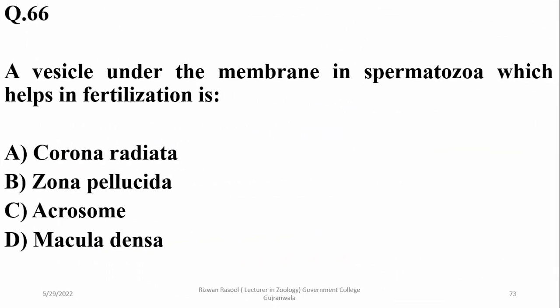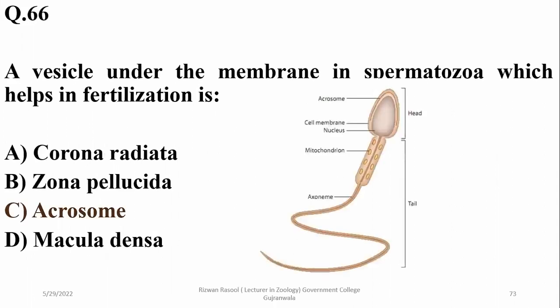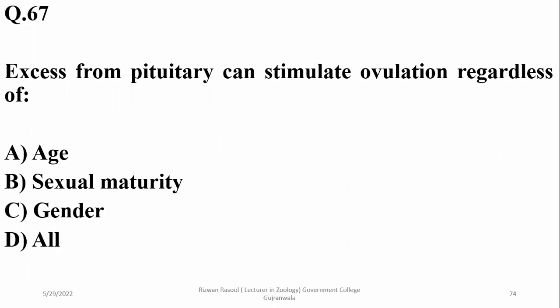Question 66: a vesicle at the end of the membrane in spermatozoa which helps in fertilization is the acrosome of the sperm, which is responsible for successful fertilization. Question 67: an extract from the pituitary can stimulate ovulation regardless of sexual maturity. The right option is beta.